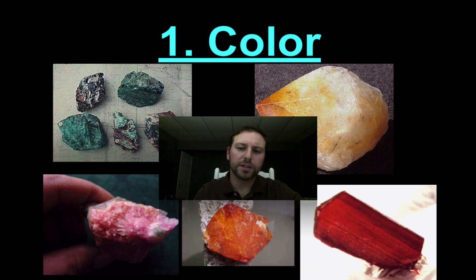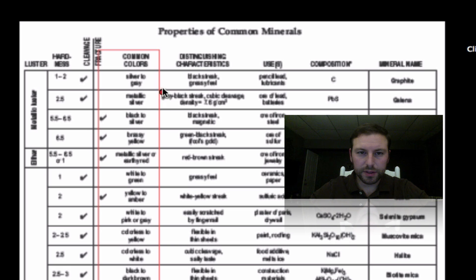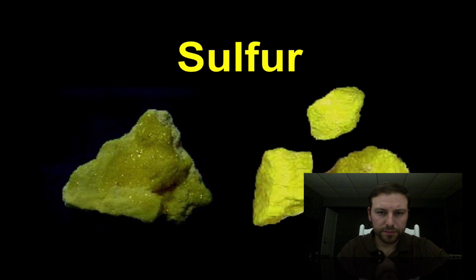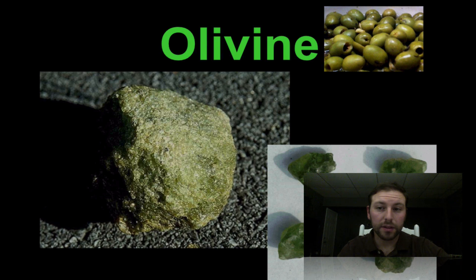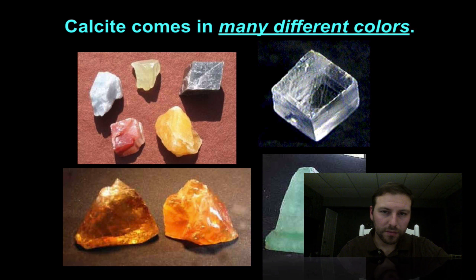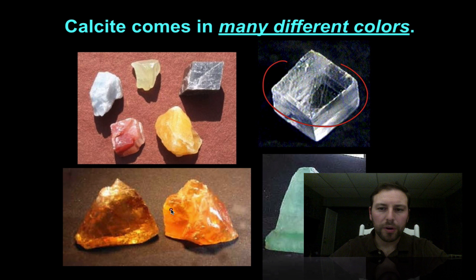The first thing we're going to look at, and probably one of the easiest ways to help us figure out what mineral we're looking at, is color. Minerals come in all different colors. Some minerals have one distinct color — for example, sulfur has a nice yellow color and olivine is green, named after the olive. Calcite, however, comes in many different colors: clear, various shades, and amber-looking colors — all calcite. So this is where the color of a mineral lends itself to some issues.